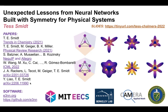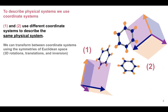Let's say we want to apply machine learning to physical systems. When describing a physical system to a computer, we need to use a coordinate system — we need to tell the computer where things are in 3D space. I could describe atoms in benzene molecules with coordinate system one or system two. It's the same physical system but described very differently; the numbers written down will be very different. We always have freedom to choose our coordinate system, and we can transform between them using 3D rotations, translations, and inversion.